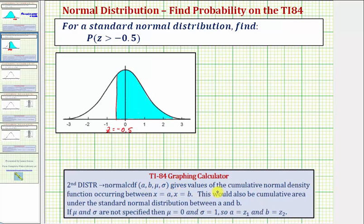This command gives the values of the cumulative normal density function occurring between x equals a and x equals b. This would also be the cumulative area under the standard normal distribution between a and b.